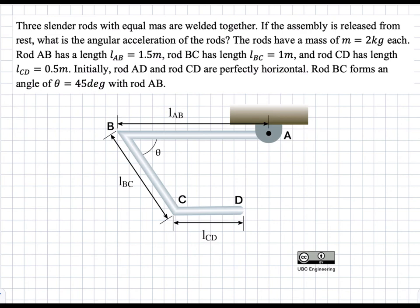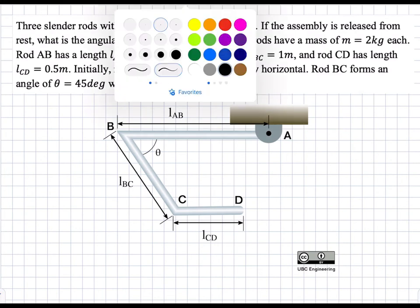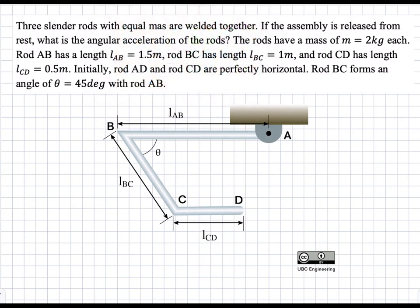In this problem we have three slender rods that are welded together and attached at A. Rods AB and CD start off horizontal, meanwhile rod BC is at an angle theta with respect to rod AB. We're asked to find the initial angular acceleration alpha of the system after it is let go from rest. Everything is pinned at A, and we're going to get an alpha pointing in the rotational direction for the whole system.